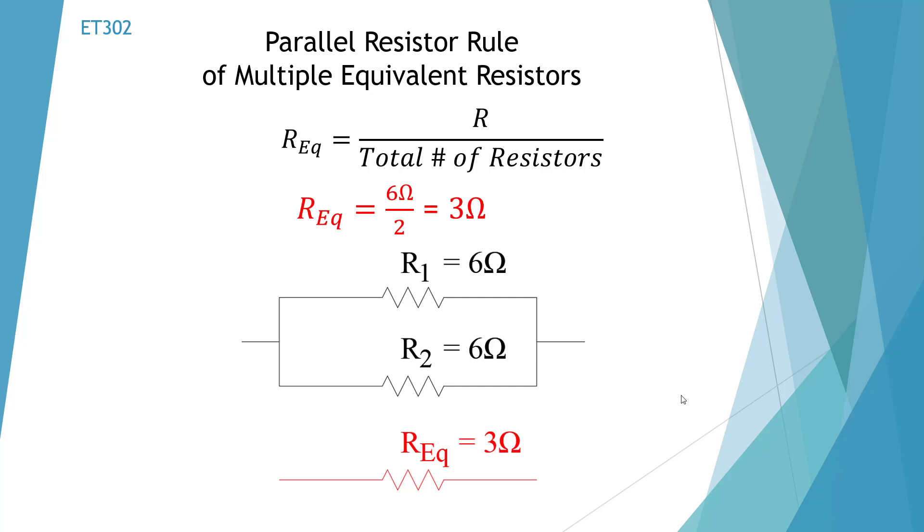It's the simplification rule, the parallel resistor rule of multiple equivalent resistors. So any time that we have equivalent resistors and they must be equivalent, we could use that resistance and divide it by the total number of resistors. Here we have 2 6 ohms. We have two resistors so we're going to have an equivalent resistor of 3 ohms.